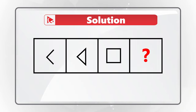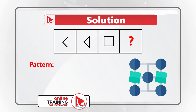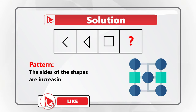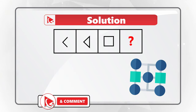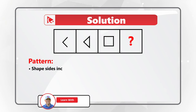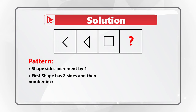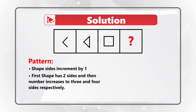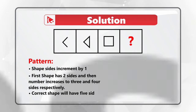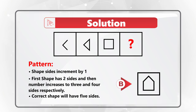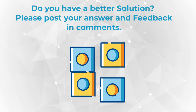The key to solving these types of challenges is to find the pattern. The pattern here is that the sides of the shape are increasing by one in each sequence. For example, the first shape has two sides, then three, then four sides respectively. This means the missing shape should have five sides, and only choice B has five sides. Hopefully you nailed this question and now know how to answer similar problems on the test.